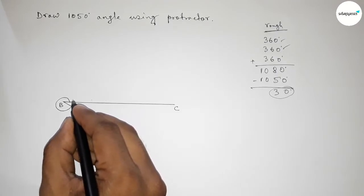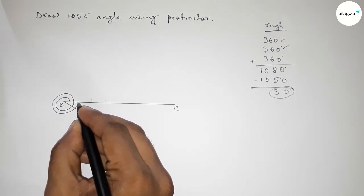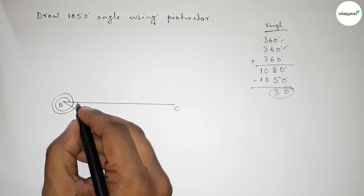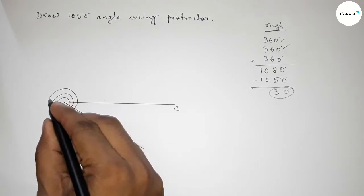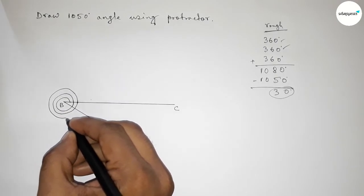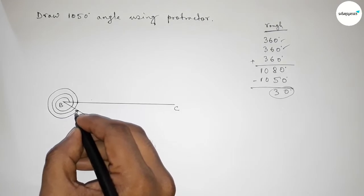Then taking another round which is 360 degree angle. So first drawing two 360 degree angles. Now subtracting 30 degree angle from 360 degrees, so drawing up to this because subtracting 30 degrees.